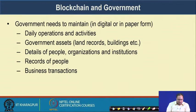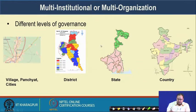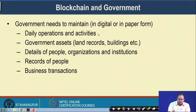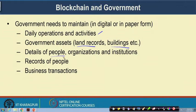From the government perspective, the government needs to maintain multiple assets — those assets can be in digital form, printed form, or paper form. The government needs to maintain daily operations and activities, different government assets like land records and building records, municipality information about buildings including their age and civil condition, details of people, government workers, organizations, institutes, records of people, and different business transactions. The government needs to deal with multiple business partners in different aspects, including supply chain management and the defense industry.